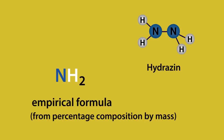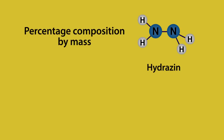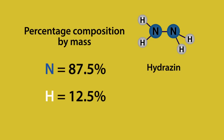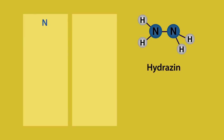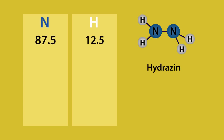The best way to find the empirical formula from percentage composition by mass is to go over a question. Upon analysis, the percentage composition by mass of a compound was found to be 87.5% nitrogen and 12.5% hydrogen. Now calculate the empirical formula. Firstly, we have a column for each element — N for nitrogen and H for hydrogen. Then, under each element, we put the percentage composition by mass: 87.5% for nitrogen and 12.5% for hydrogen.